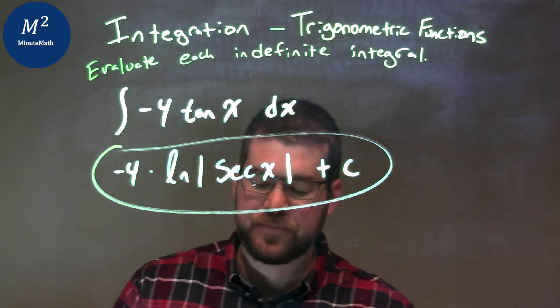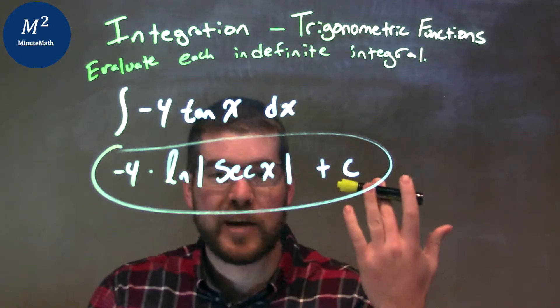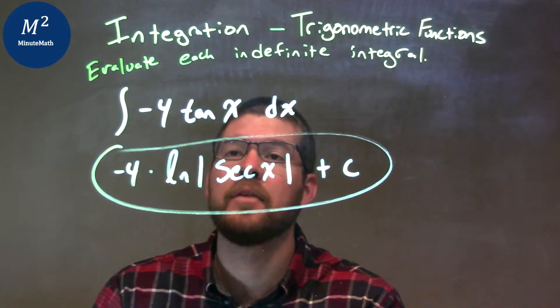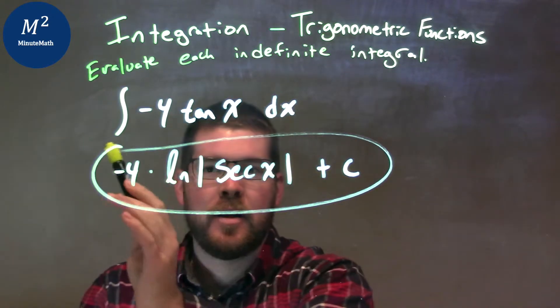So, let's recap. We're given the integral of negative 4 tangent of x dx. If you know our trig identities, which is worth memorizing there, the negative 4 comes out front, we just keep it up there, that constant.